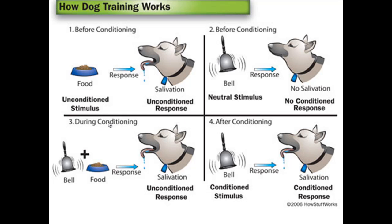The next thing Pavlov did was pair the bell with the food. Every time the food was put down, he rang the bell as well. The dog would salivate because of the presence of the food. He repeated this over and over again — every time he put the food down, he rang the bell — until the dog began to associate the food with the bell.